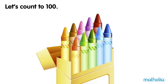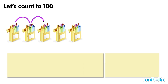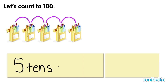Let's count to 100. There are 10 crayons in each box. There are 5 boxes. How many crayons are there? 10, 20, 30, 40, 50. There are 50 crayons. 5 tens equals 50.